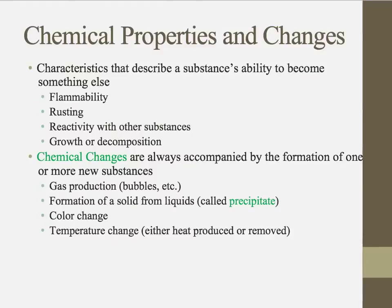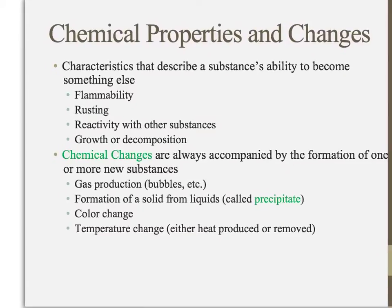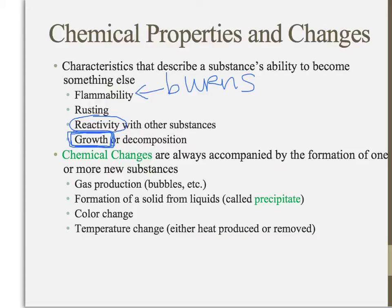There are other properties that are often used to describe substances and matter, called chemical properties, because they describe the ability of a substance to turn into another substance. Flammability — how easily it burns — when something burns, it forms new substances. Rusting describes how easily something reacts with oxygen to cause the formation of new substances. Reactivity in general describes how likely it is that the substance will bond to or alter other substances. Decomposition is how likely that substance wants to break down and disintegrate into something else.